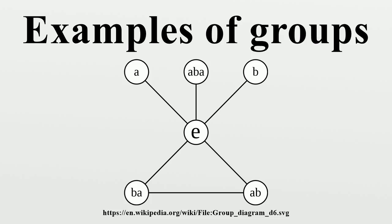The free group with two generators A and B consists of all finite strings that can be formed from the four symbols A, A⁻¹, B, and B⁻¹ such that no A appears directly next to an A⁻¹ and no B appears directly next to a B⁻¹. Two such strings can be concatenated and converted into a string of this type by repeatedly replacing the forbidden substrings with the empty string. For instance, AB⁻¹A⁻¹ concatenated with AB⁻¹A yields AB⁻¹A⁻¹AB⁻¹A, which gets reduced to AB⁻¹A. One can check that the set of those strings with this operation forms a group with neutral element the empty string epsilon. This is another infinite non-abelian group. Free groups are important in algebraic topology. The free group in two generators is also used for a proof of the Banach-Tarski paradox.